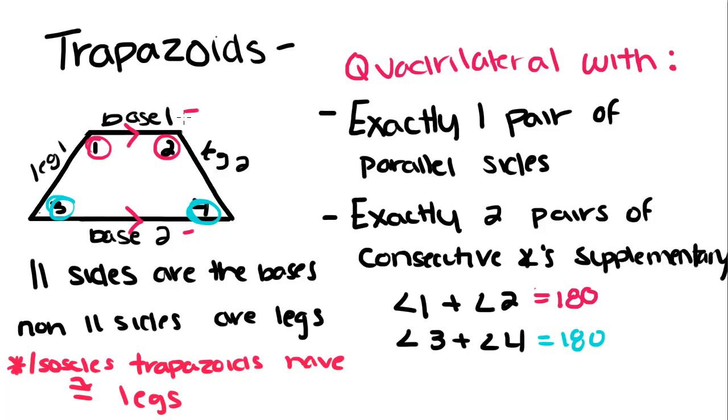So like I said, the parallel sides are called the bases, and the non-parallel sides are called legs. So these two right here are legs. And in an isosceles trapezoid, these legs are congruent. But that's only in an isosceles trapezoid.